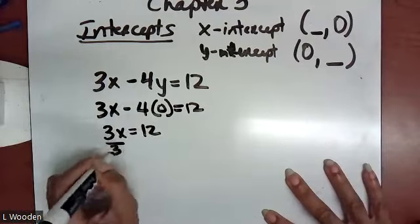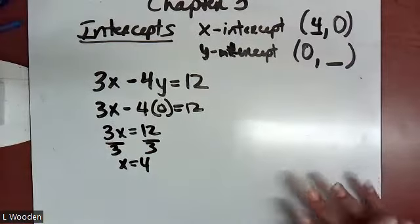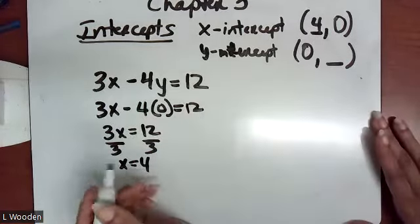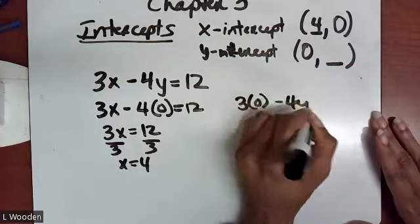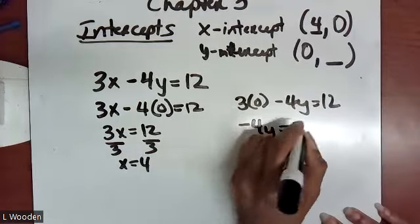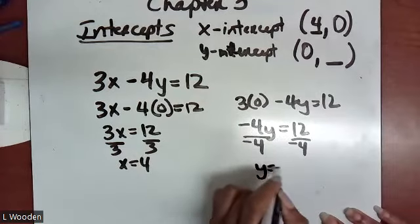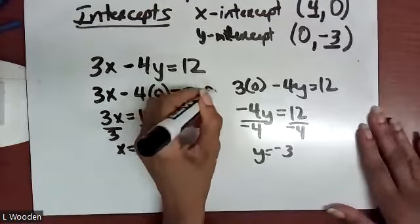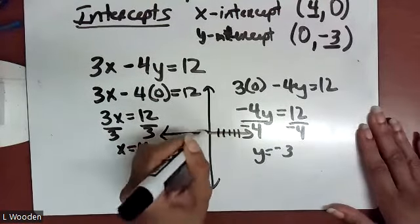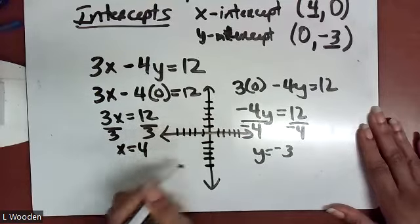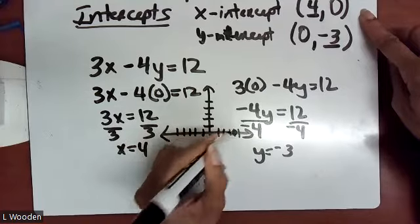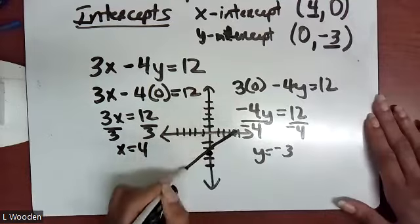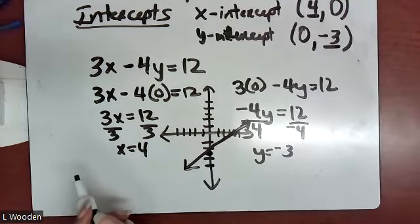For the equation 3X minus 4Y equals 12: to find the X intercept, substitute zero for Y. You get 3X equals 12, so X equals 4. The X intercept is 4. To find the Y intercept, substitute zero for X: negative 4Y equals 12, so Y equals negative 3. Then use those intercepts to graph. The X intercept (4, 0): go to where X is 4, Y is zero — don't go up or down. The Y intercept (0, negative 3): X is zero, go down to negative 3.